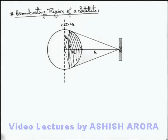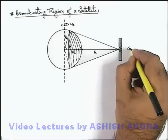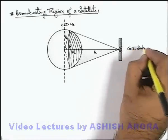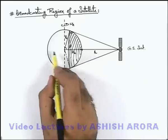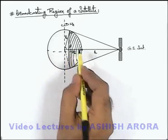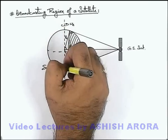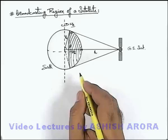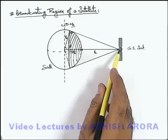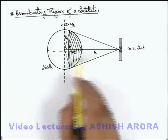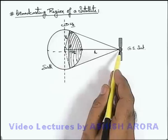Let us discuss the broadcasting region of a satellite. To understand this, let us have a look at the picture here. This is a geostationary satellite located at a height h above the earth's surface, right above the equator. The earth is revolving about its own axis of rotation at an angular speed omega_e, and this geostationary satellite is revolving in the equatorial plane at height h.